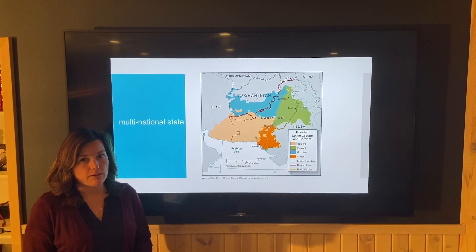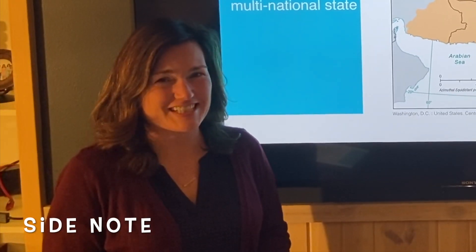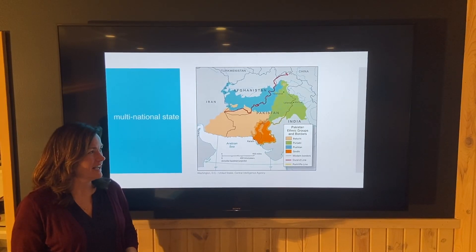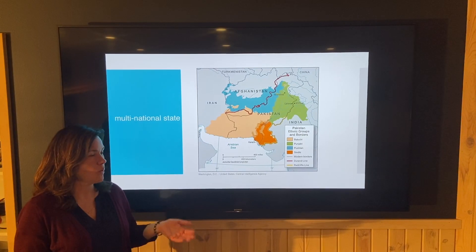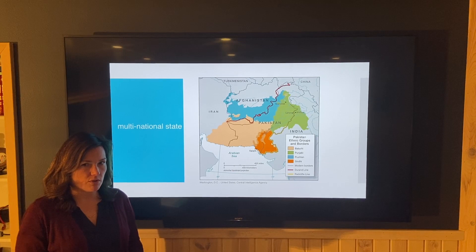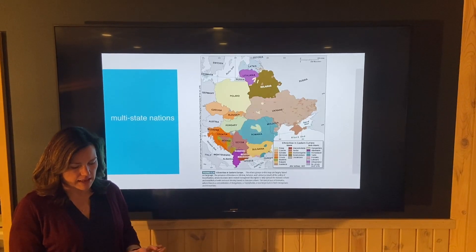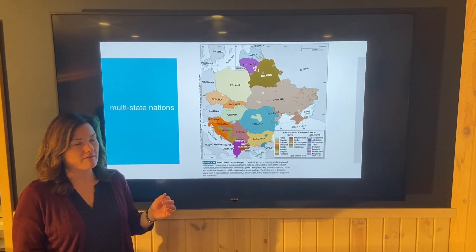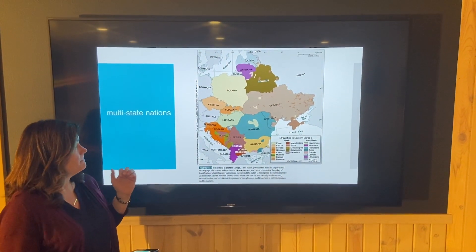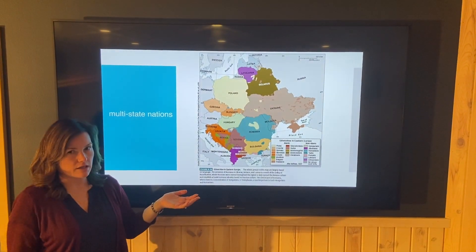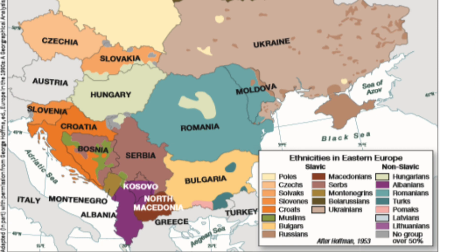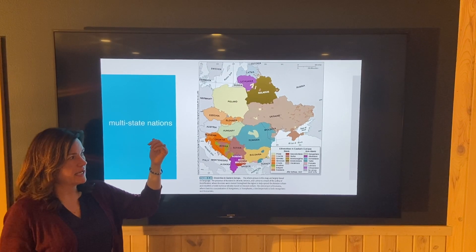Multinational states — pretty much every country in the world is one. A good example is Pakistan, where you've got four major nations within one state — at least four major groups of people. Multi-state nations occur when one nation spans many states; Eastern Europe has many examples. For instance, Serbs are found in Serbia and also in Bosnia; Croats are found in Croatia and also in Bosnia. Those are multi-state nations.